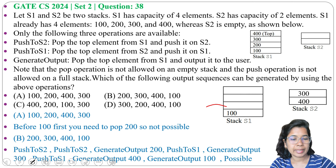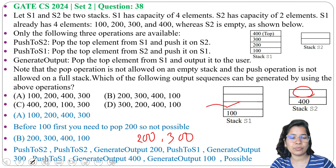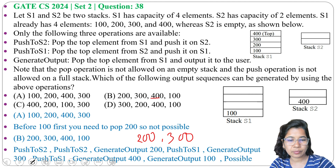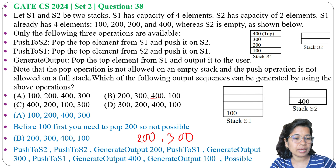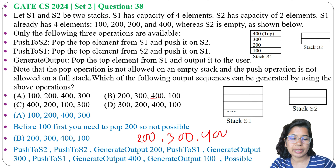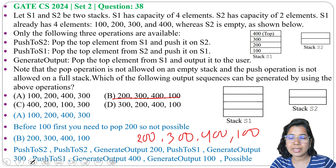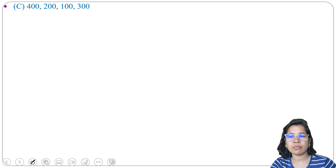Then push to S1: pop 300 from S2 and push to S1. Generate output: pop 300 from S1 and output it. Next, push to S1: pop 400 from S2 and push to S1. Generate output: output 400. Then generate output: output 100. So the sequence 200, 300, 400, 100 is possible.